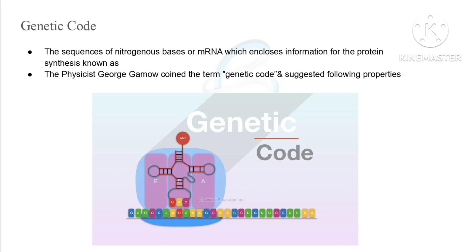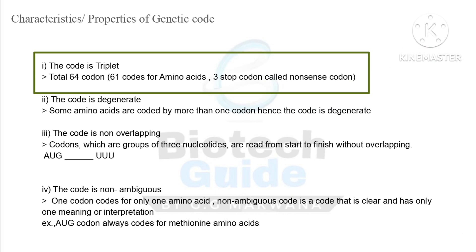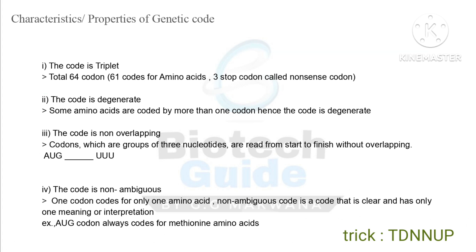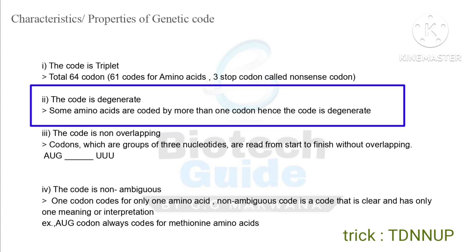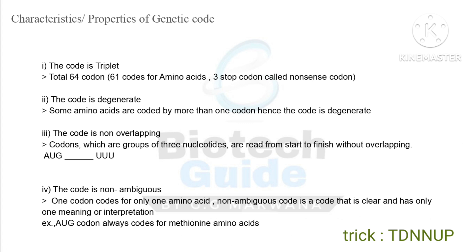So let us discuss the properties. First, the code is triplet — all codons are triplet in form. Total 64 codons are there: 61 codes for amino acids and three are stop codons, which are also called nonsense codons. Second, the code is degenerate, meaning some amino acids are coded by more than one codon.